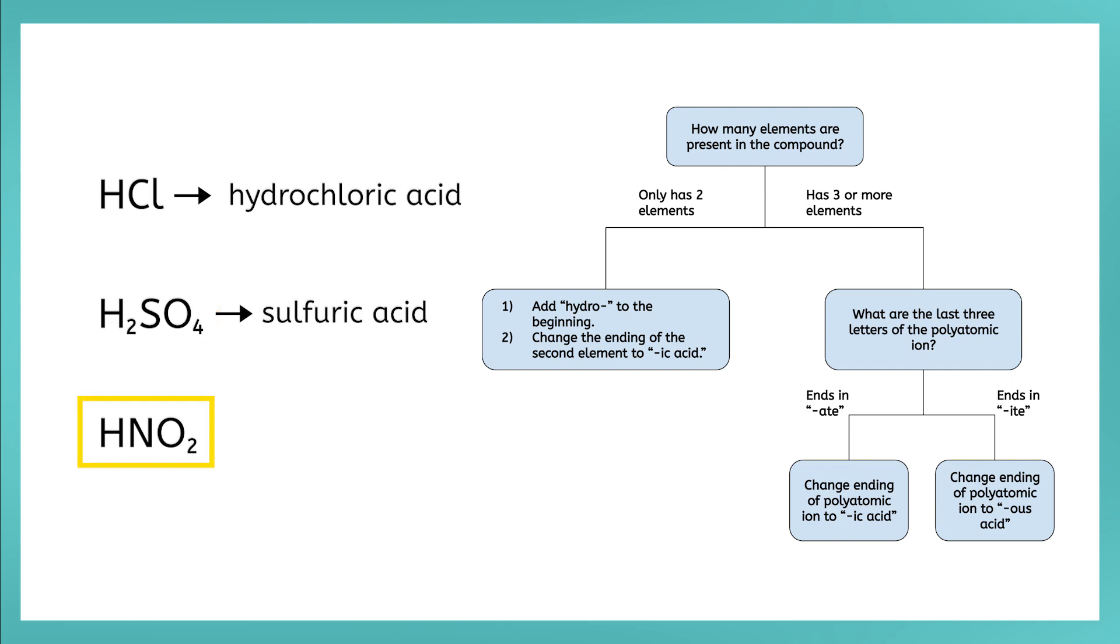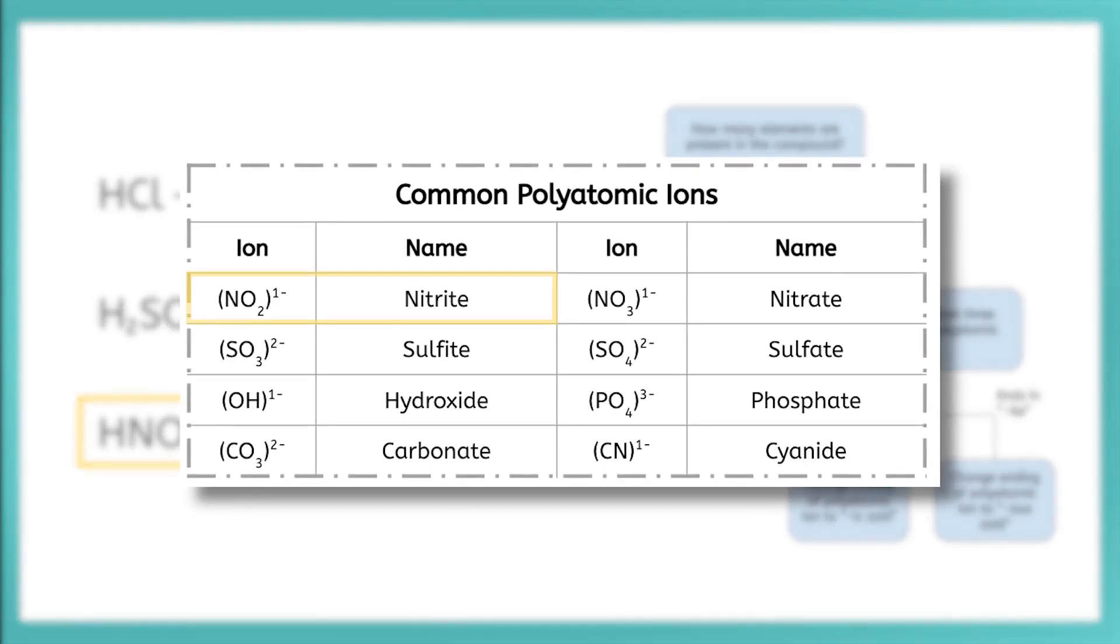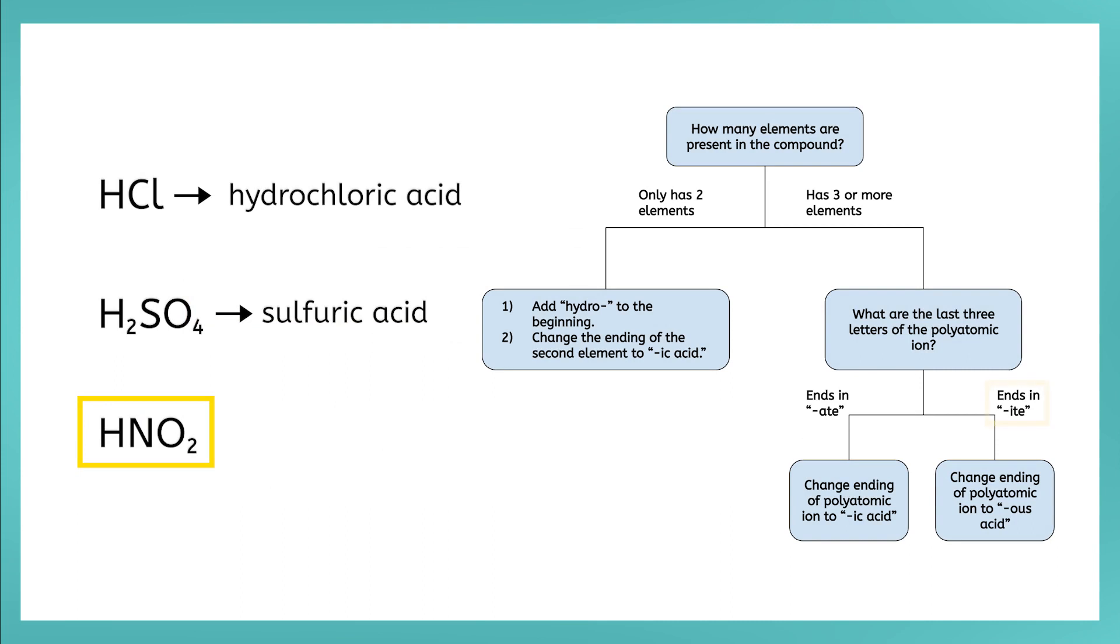Okay, try HNO2 on your own. There are three elements, so we have to look at the name of the polyatomic ion on the polyatomic ion chart. NO2 is nitrite. So, according to our flow chart, we change the ending to O-U-S, add the word acid, and there is no prefix. This means HNO2 is nitrous acid.